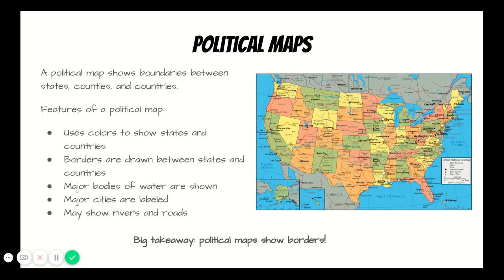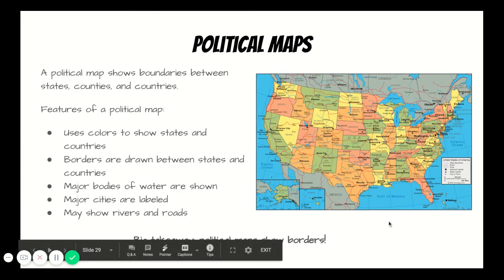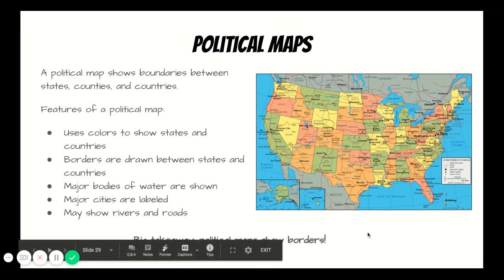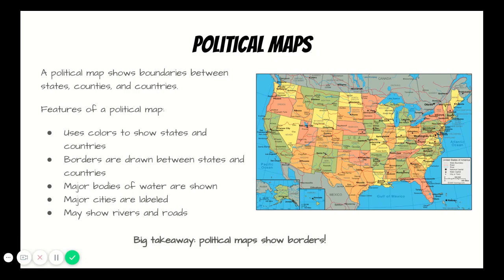Political maps use colors to show states and countries. Borders are drawn between states and countries. On a political map, major bodies of water are labeled — the Pacific Ocean, Atlantic Ocean, as well as the Gulf of Mexico. Major cities are labeled. The capital of each state is labeled on this map. We can see the capital of Tennessee, Nashville, on this map. Political maps also may show rivers as well as roads.